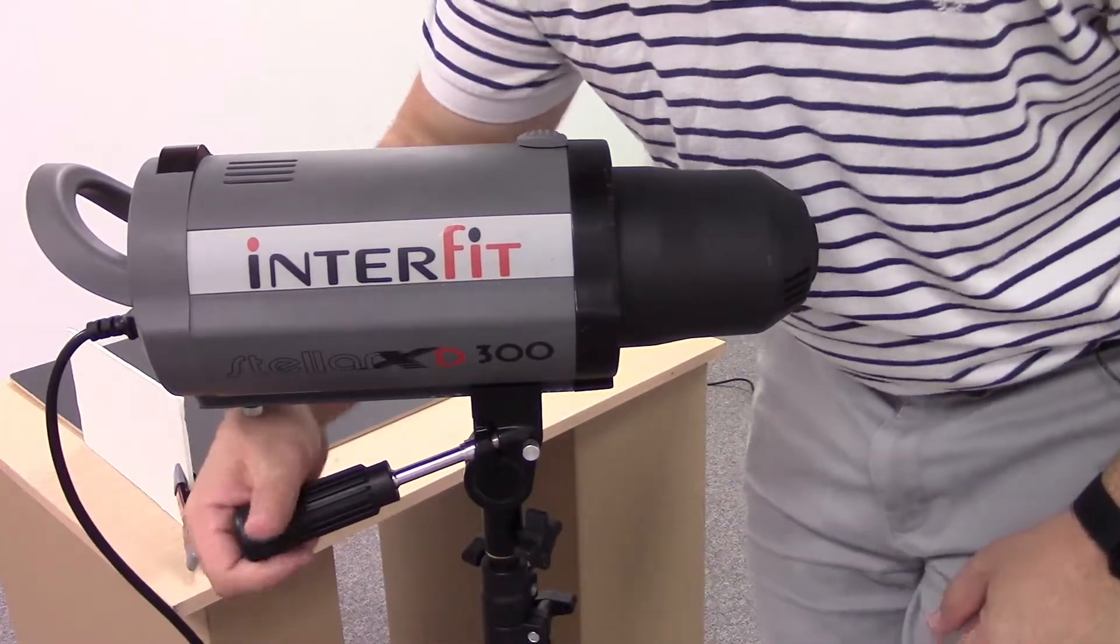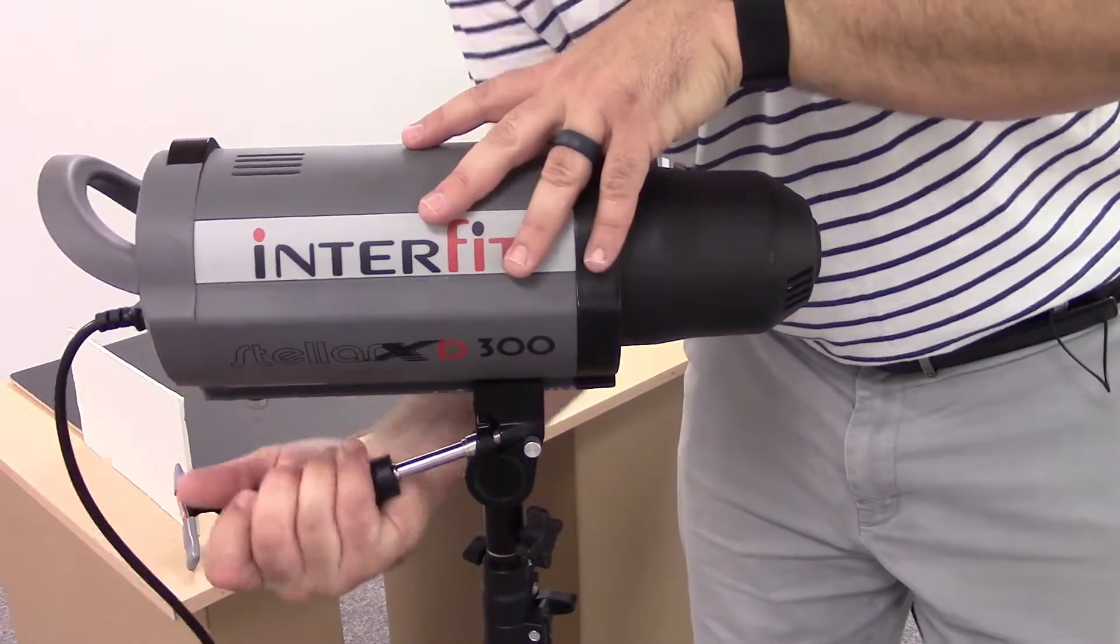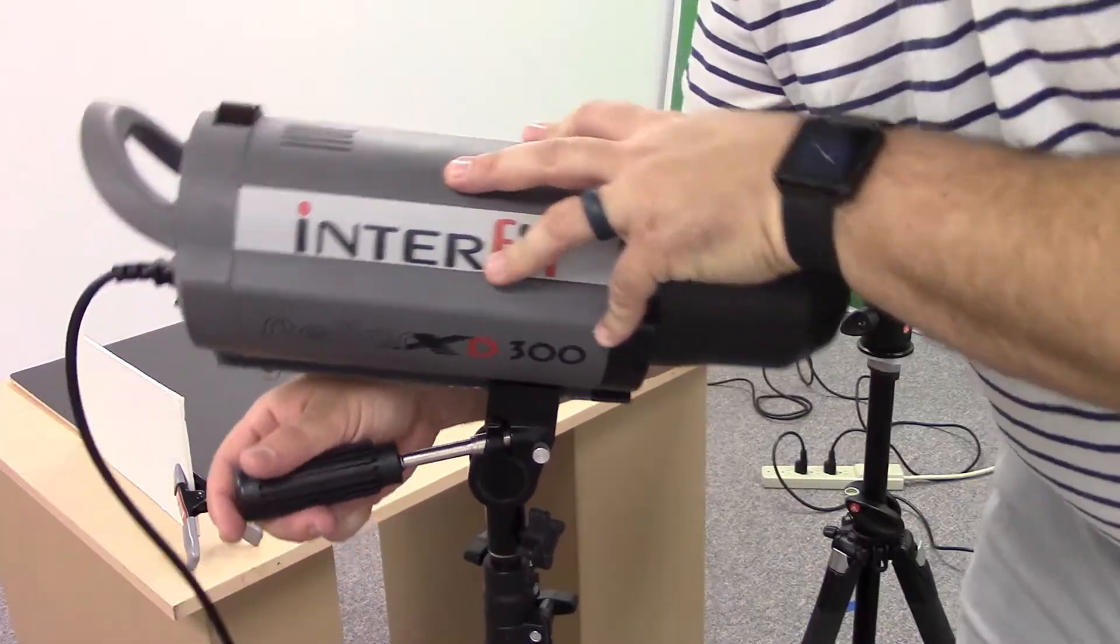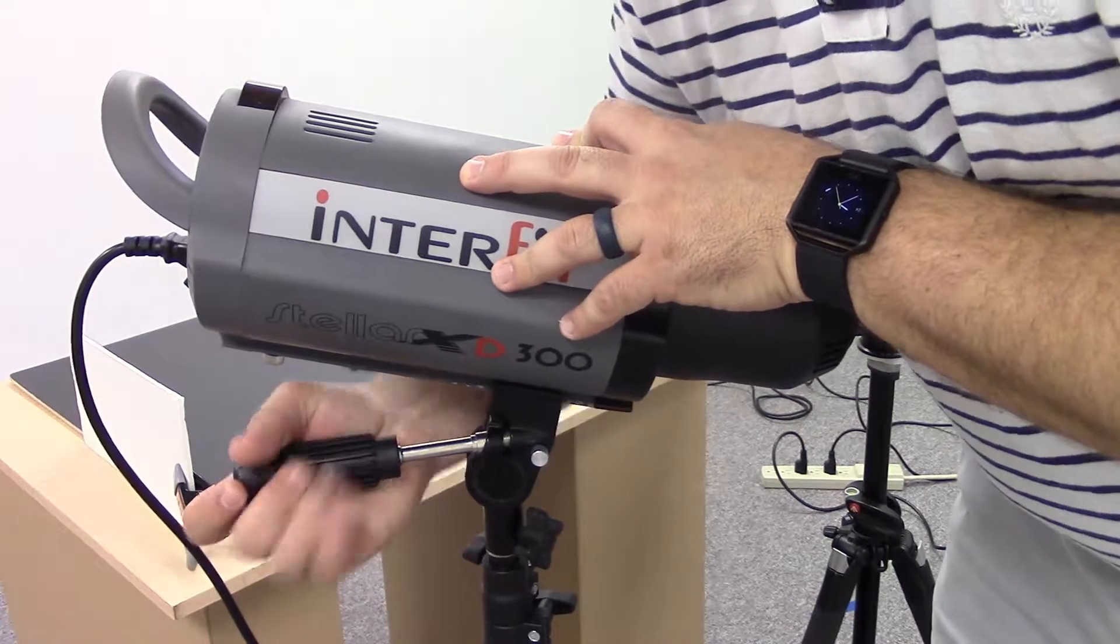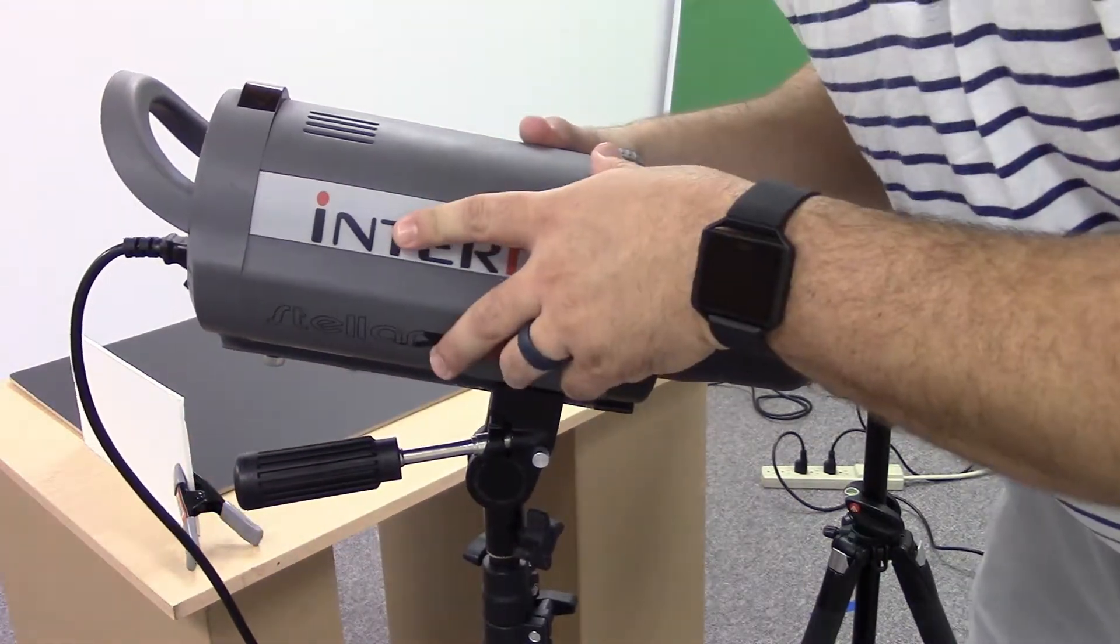Right here we have a knob that allows us to loosen or tighten. This thing is going to pivot and you can set it up how you need to, tighten it back up and then it won't move.